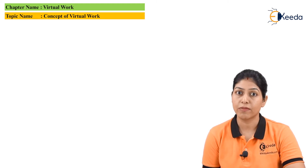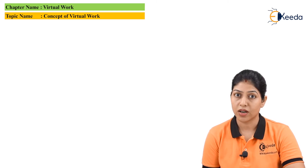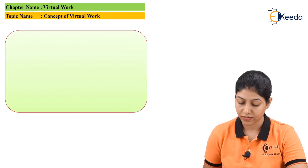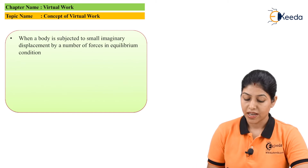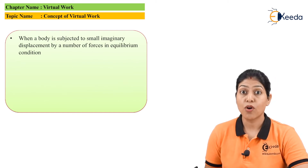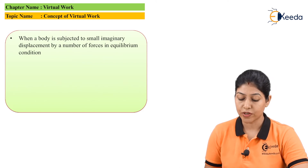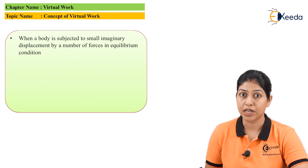So if we want to define the work done by the body when the body is in equilibrium condition under the application of a number of forces, this particular work done we generally define by the virtual work. Let us consider a body subjected to small imaginary displacement by the number of forces when the forces are converting that body into equilibrium condition.